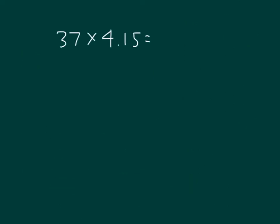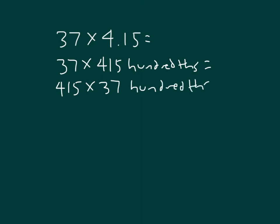Let's look at one last problem. We have 37 times 4.15. That would be 37 times 415 hundredths. Remember, this is commutative property meaning I could go 415 times 37 hundredths as well. We'll show you using an area model and then we'll match it up to that standard algorithm.